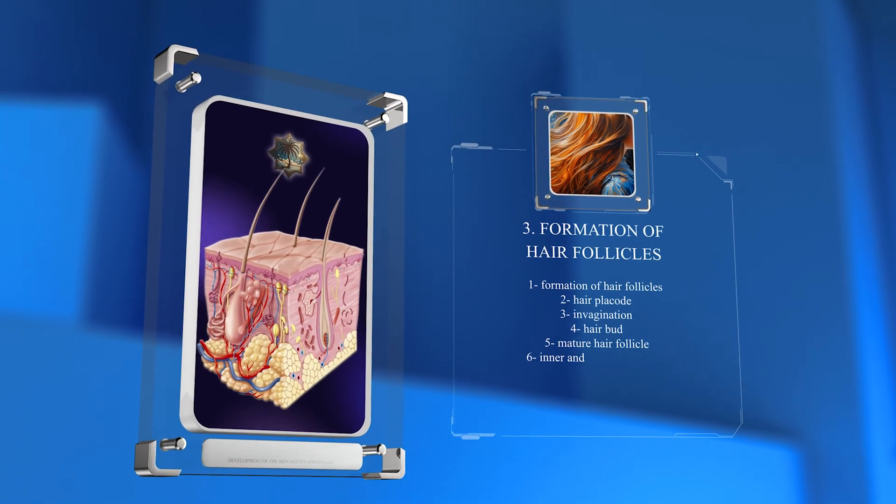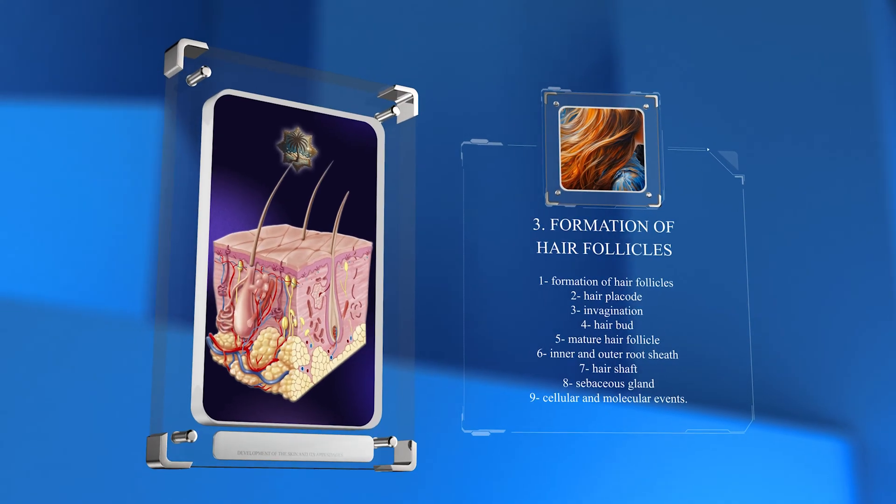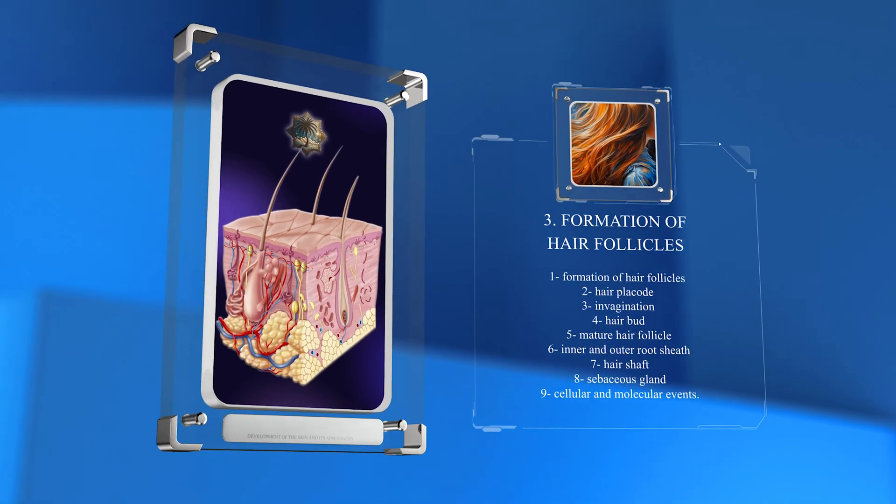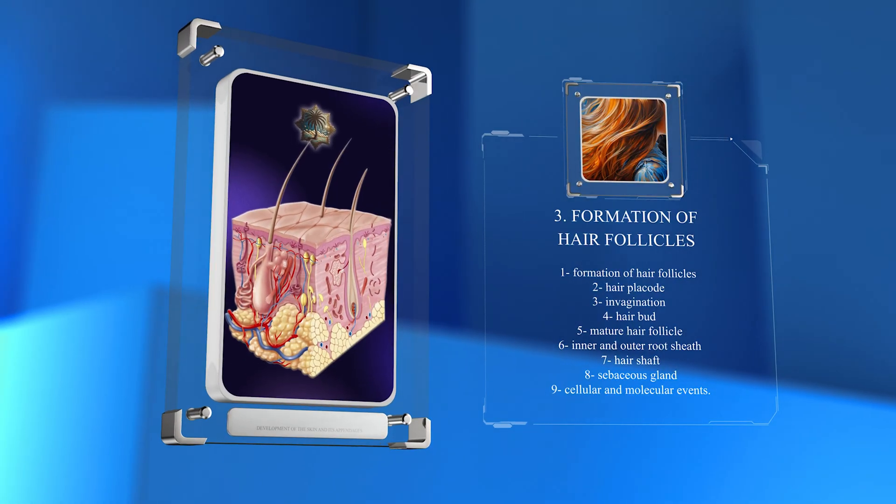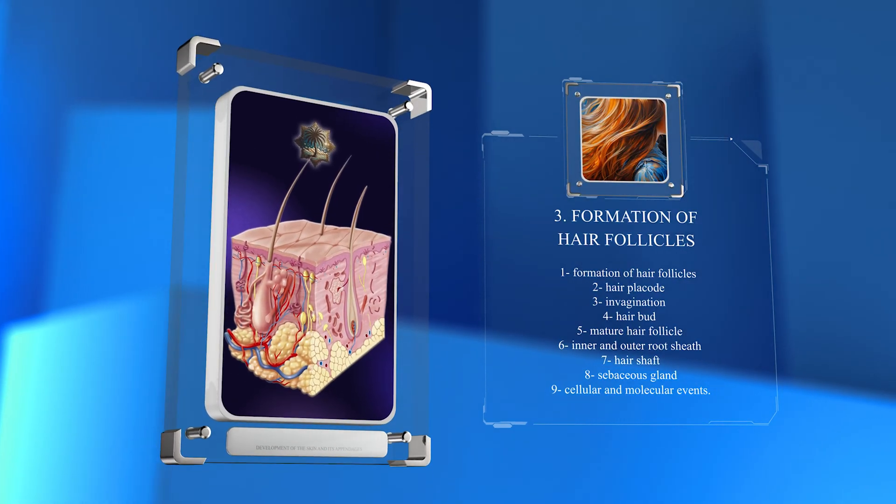The formation of hair follicles is a complex process that begins with the development of a specialized region of the epidermis called the hair placode. This placode invaginates to form a hair bud, which eventually differentiates into the mature hair follicle, including its various components.